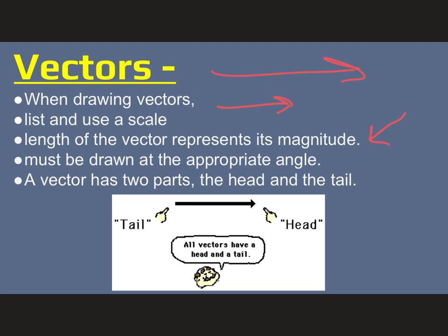Also, when we draw vectors, we always start with a tail and end with a head. So the actual arrow of a vector is called a head, and the beginning of a vector is called a tail. And keep in mind that direction matters.